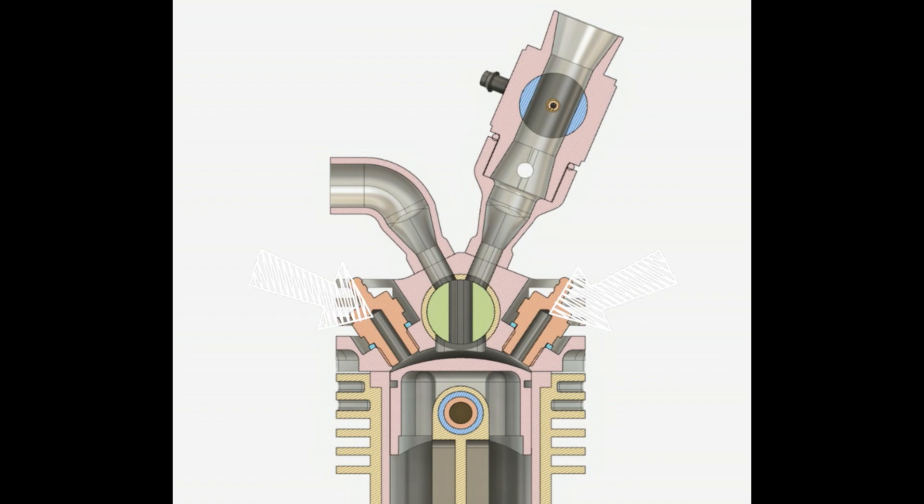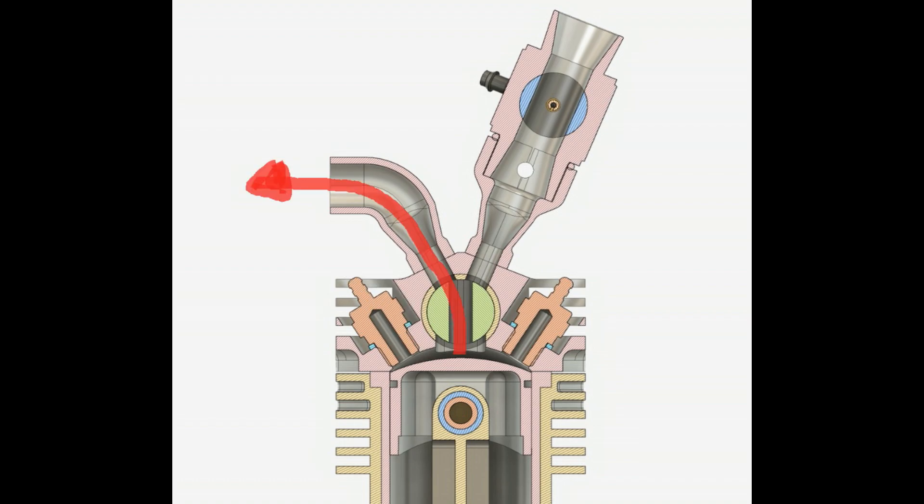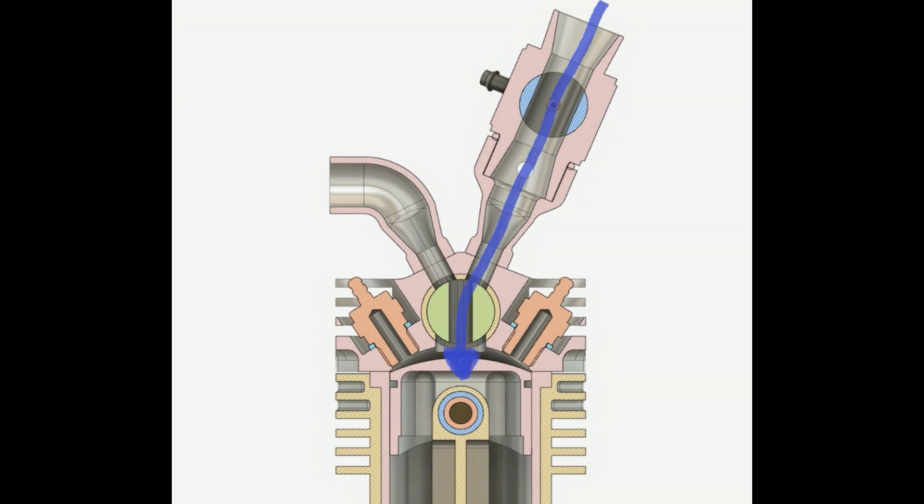These are the two glow plugs. This is the hemispherical combustion chamber. The exhaust gases flow is shown here in red. The inlet gases flow is shown here in blue.